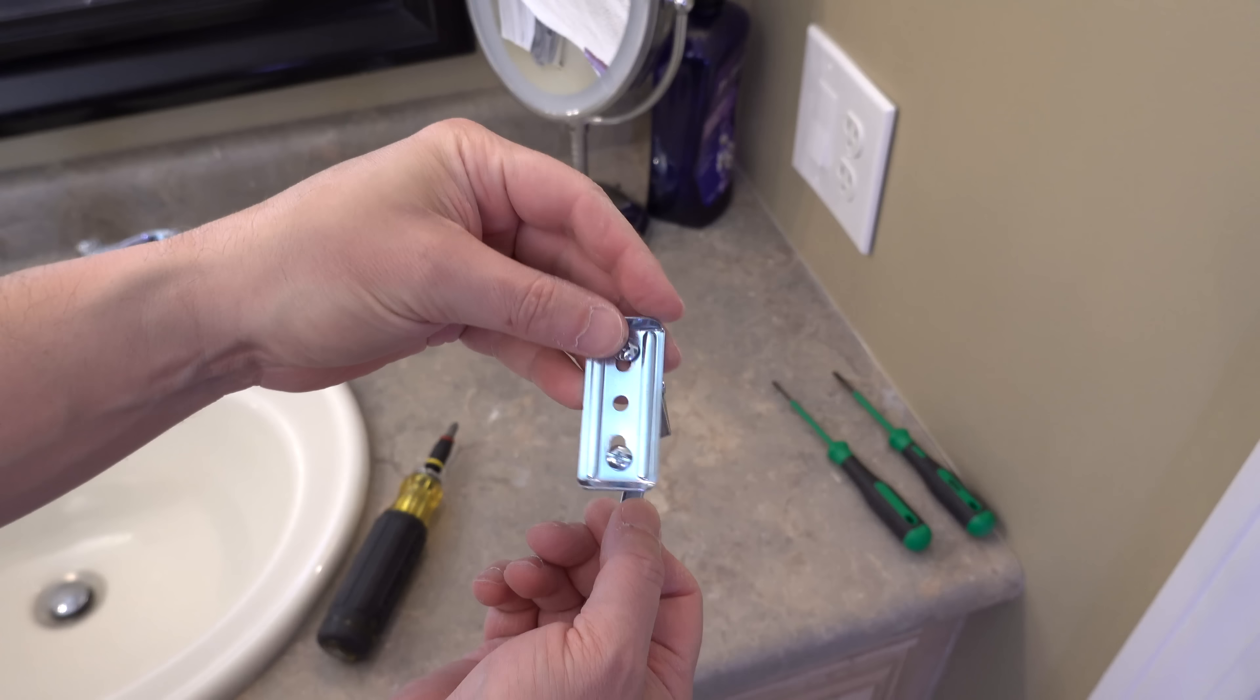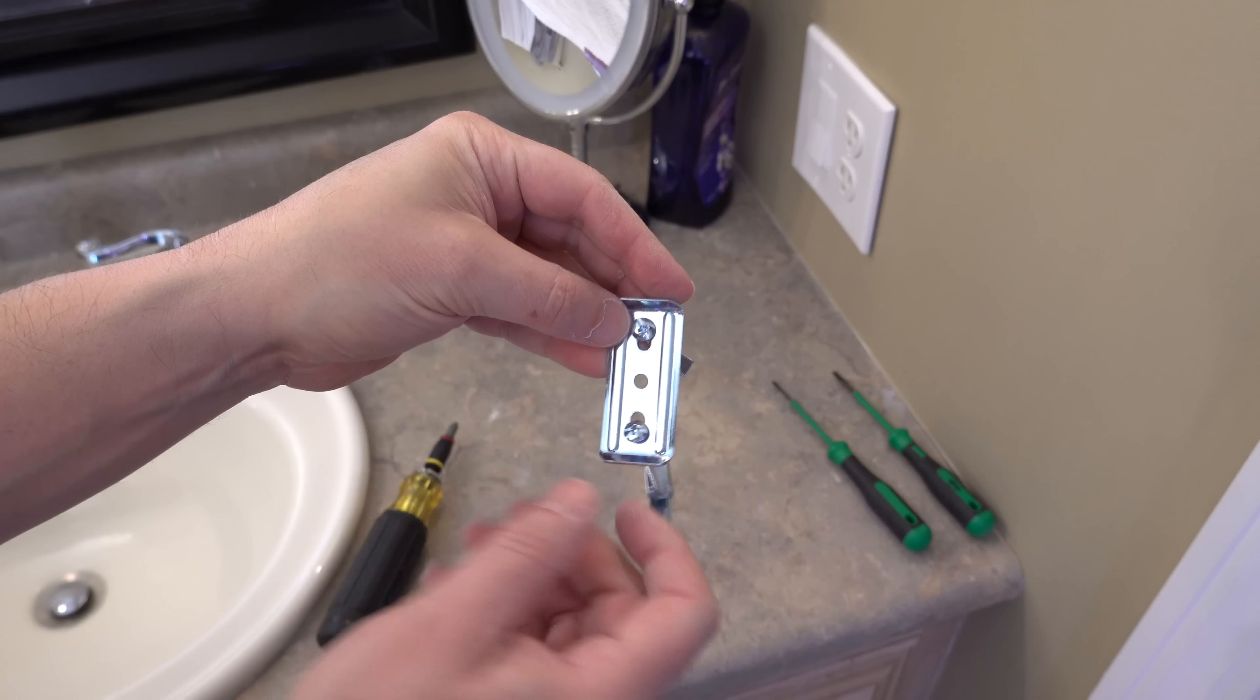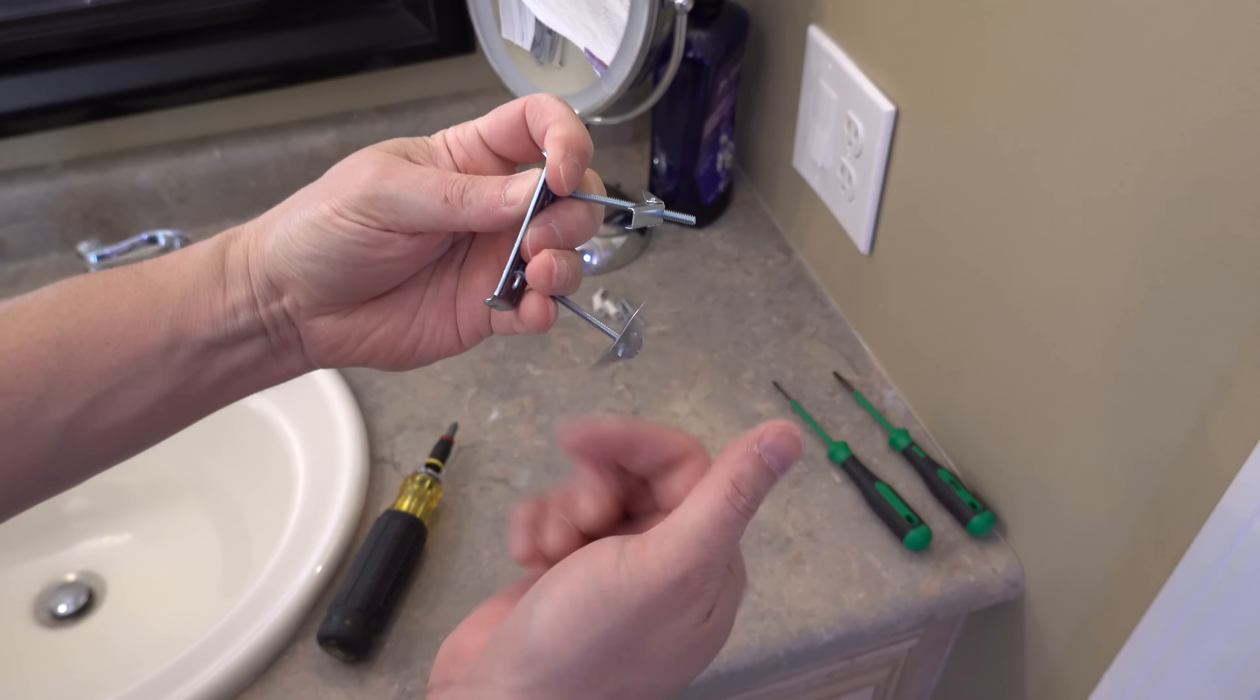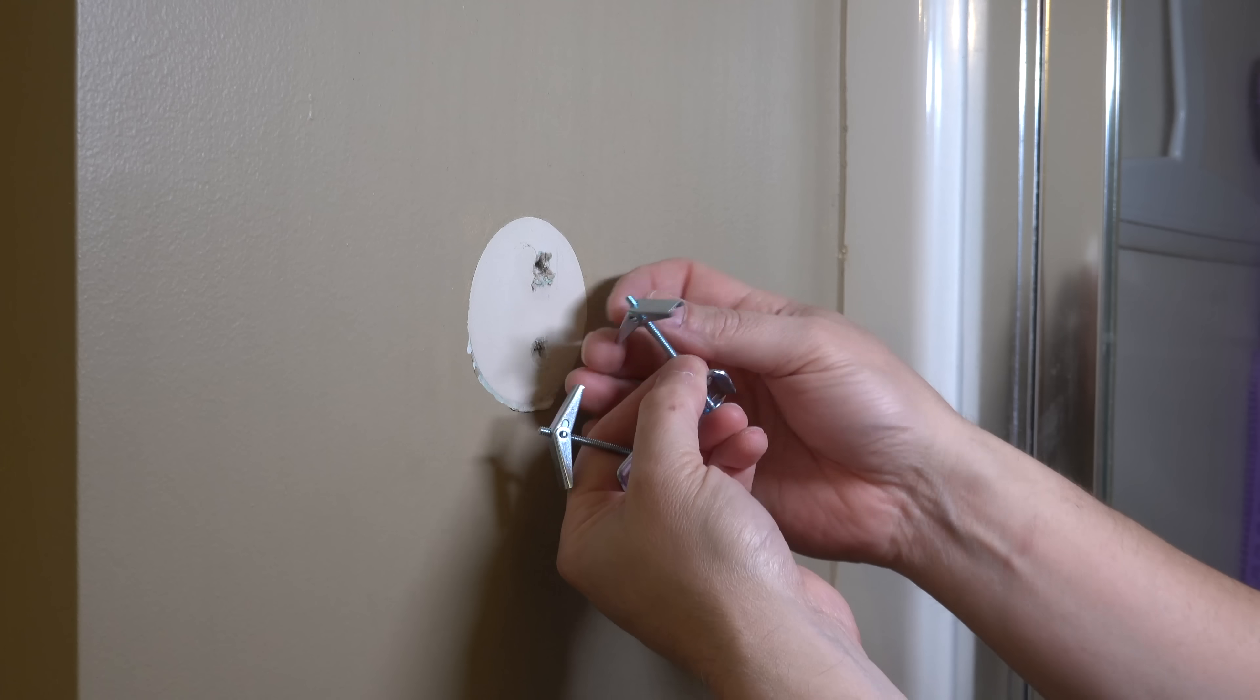This is what your finished bracket is going to look like and don't screw those wings down too far. There needs to be enough space between the screw head and the wing so that it can insert into the wall and fully open up.